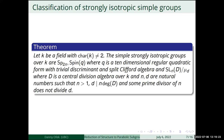Let's state the main result. We have the classification in the simple case: the simple strongly isotropic groups over a field with characteristic not two are the symplectic groups, spin groups of 10-dimensional quadratic forms with trivial discriminant and split Clifford algebra, and SL(n) over some division algebra — allowing modding out by a central cyclic subgroup with the criterion that the order of the subgroup sometimes divides n but does not divide d.